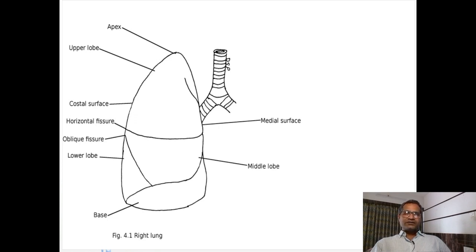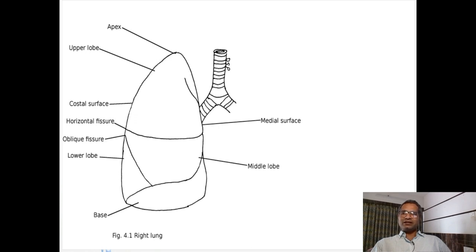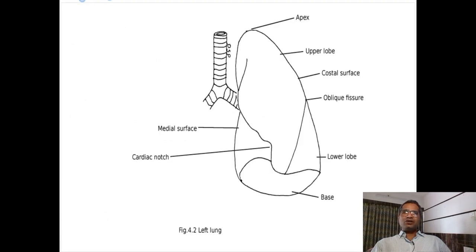The horizontal fissure is present only in right lung - in left lung there is no horizontal fissure. It extends from the anterior margin of the lung at the level of the fourth costal cartilage, runs horizontally backward, and meets with the oblique fissure in the mid-axillary line. Therefore in right lung three lobes are formed, and in left lung only two lobes are present.